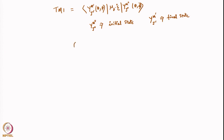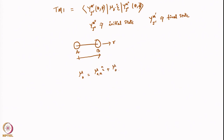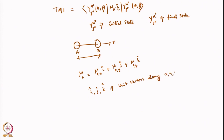Now, if you consider the molecule AB and this is some direction R, R could be pointing in any direction along x, y, or z. So your μ₀ will be equal to μ₀ along the x-axis into unit vector i, plus μ₀ along y into unit vector j, plus μ₀z into unit vector k, where i, j, k are unit vectors along the x, y, z axes.